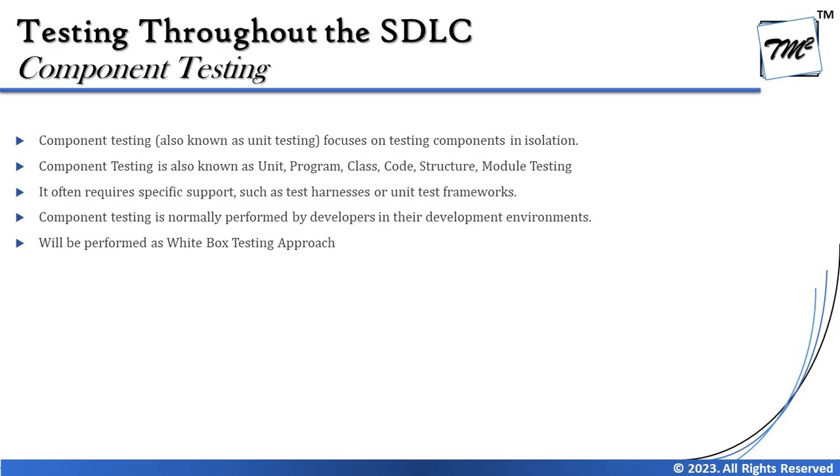Unit testing often requires specific support such as test harnesses or unit test frameworks. You may need a framework like JUnit for Java, PyTest for Python, GTest, NUnit, or XUnit — language-specific frameworks are available for running unit tests. A test harness refers to dummy modules or supporting mocks that may not yet exist while the system is still being developed; we use stubs and mocks as dummy modules, and the test harness helps create these.